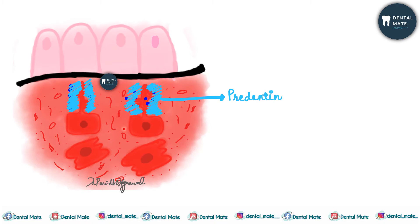Predentine is now formed. After the formation of predentine, the inner enamel epithelial cells differentiate into ameloblasts, and then enamel formation takes place. First, a predentine layer is formed.